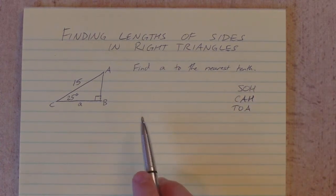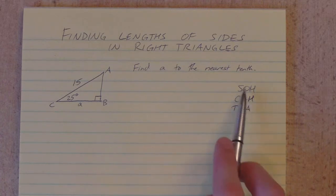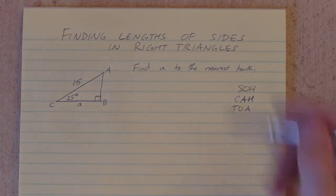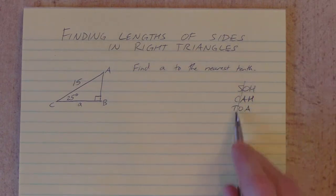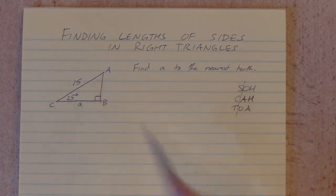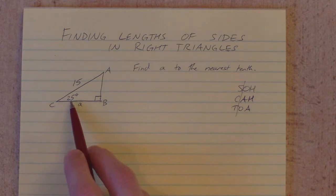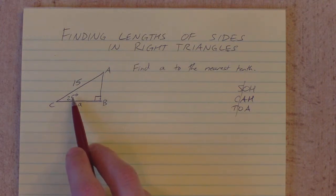So we're going to have to set up a trig ratio. We don't know whether we're going to use sine, cosine, or tangent, which one of those we need, because we haven't really looked at which sides we have here. We know this angle here is 25 degrees. That's going to be the angle we're working with.